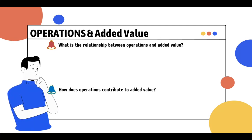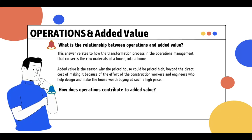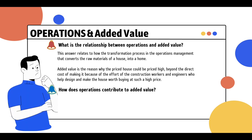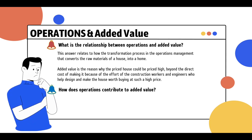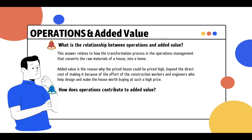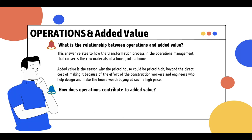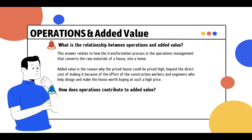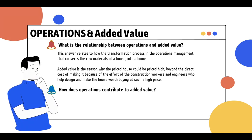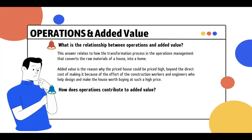So what is the relationship between operations and added value? It relates to the transformation process. For example, raw materials used to build a house are converted into a home that people find beautiful and desirable. That transformation is where added value happens. The price of the house can be very high — beyond the direct cost of making it — because of the effort of construction workers and engineers. If more added value is added into the transformation process, the house can be priced higher, making added value even greater.